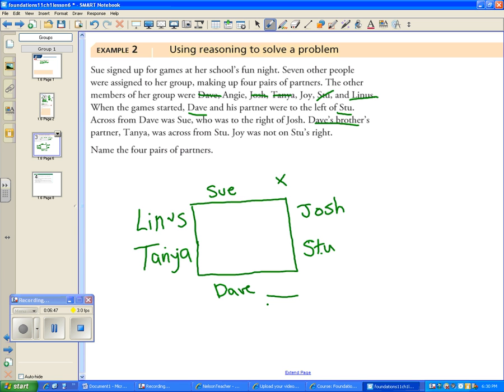It said Joy is not on Stew's right, so it must be on Stew's left. Joy must be here, so we're left with Angie. So these are the four pairs of partners. My question is, what type of reasoning did I use here? Did I use inductive reasoning, or did I use deductive reasoning? In this case, I used deductive. I used facts. All of these facts were given here, and I just used those facts to find my answer.